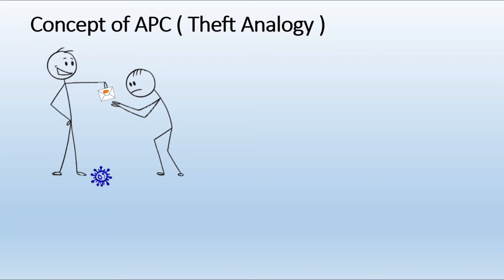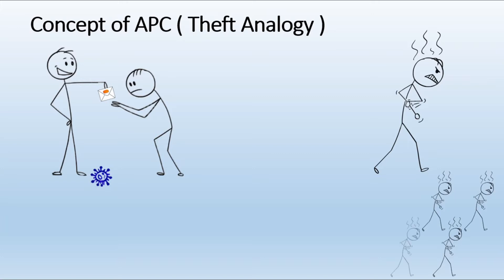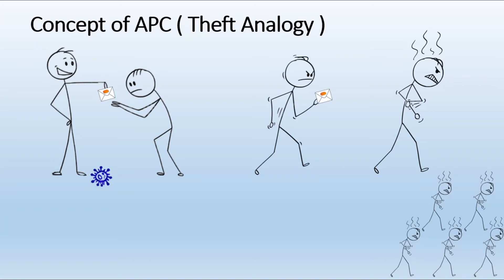After receiving the name of the thief, the owner of the house has multiple options. He can take the matter into his own hands — similar to WBCs that, after recognizing a pathogen, start multiplying, produce copies of themselves, and all the cells together fight against that pathogen. Or he can approach authorities like the police department and present the identity of the thief to them so they can take counter measures.